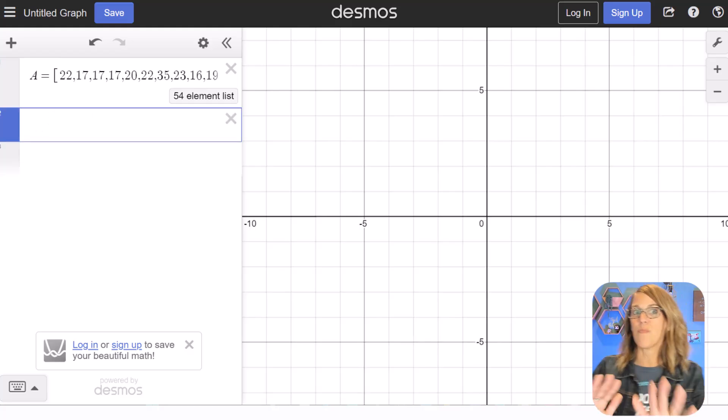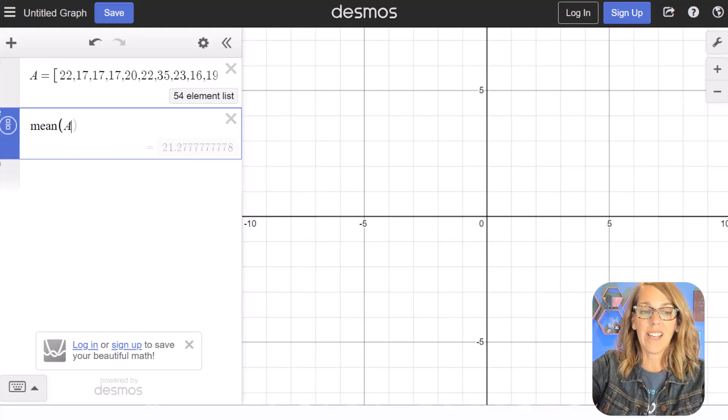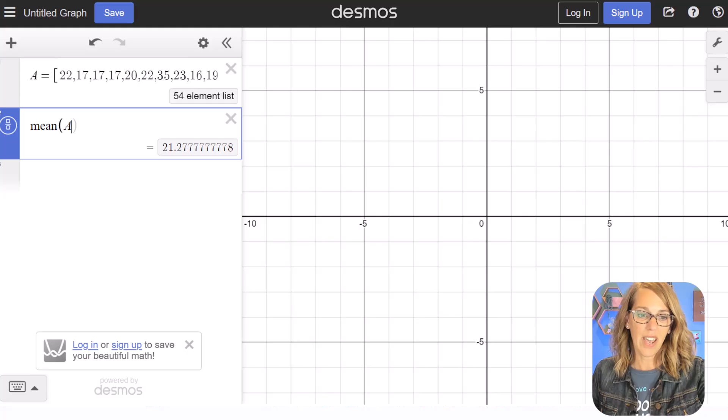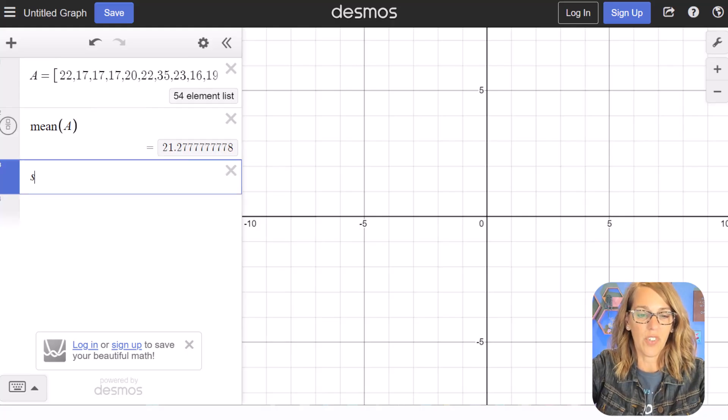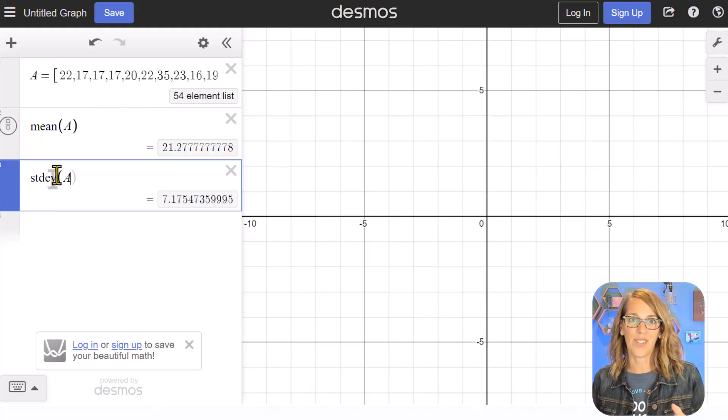Just because I want to show you both ways to do this, either with the data or with the stats, I'm going to ask Desmos quickly for a mean of my data set and I'm also going to ask it for the sample standard deviation which is stdev of A. So I've got both of those values. Let's run the hypothesis test. Let's run that inference.